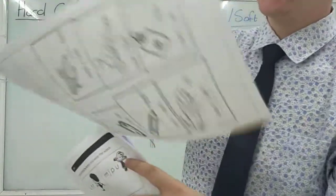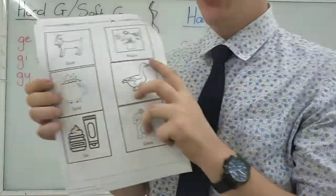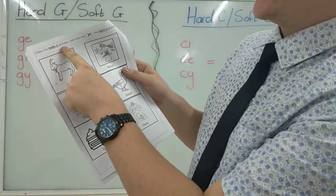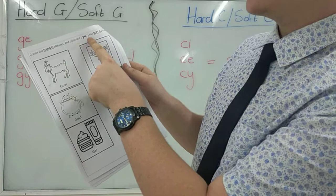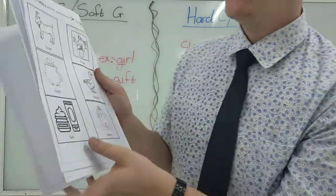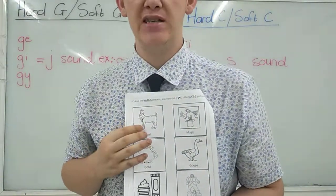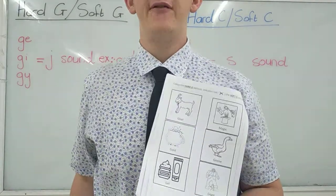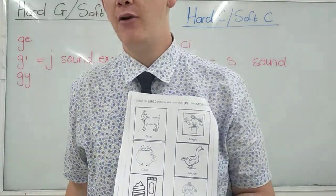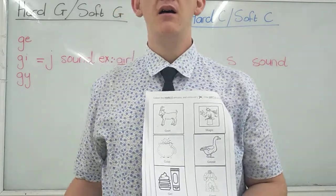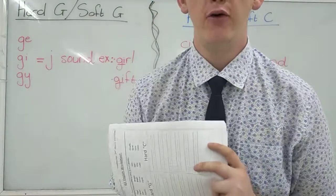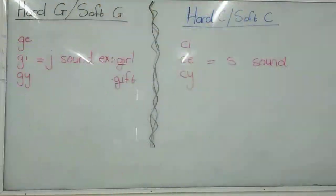And then you have, it's double-sided, so you do the back as well. On the back it says color the hard G pictures and cross out the soft G pictures. So if it makes a hard G sound, you color the picture. If it makes a soft G sound, you cross out with an X. This will be your worksheet for the morning. Thank you very much.